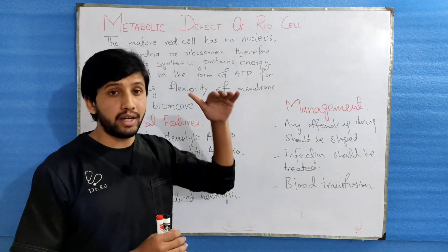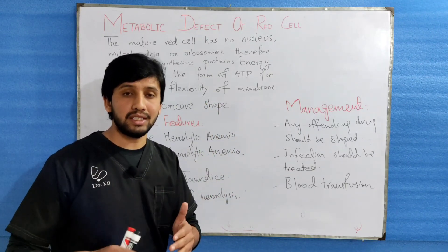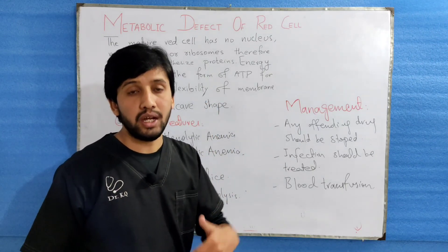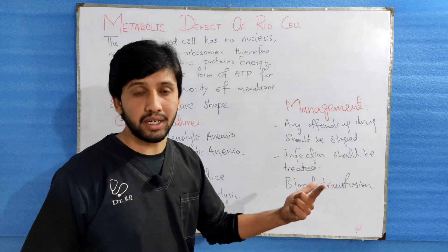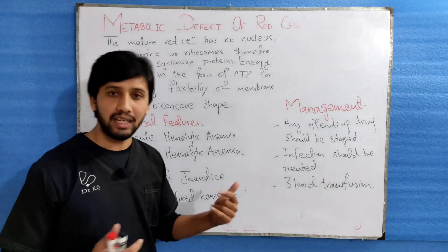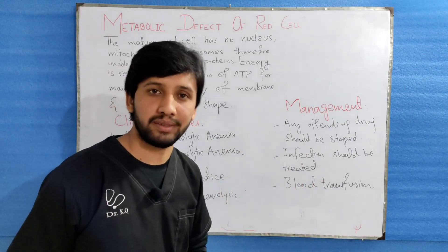Today we are done with the metabolic defects of red blood cells leading to anemia, and also with inherited hemolytic anemia. We will discuss another type of anemia in the next videos. Thank you guys — keep sharing and keep supporting.